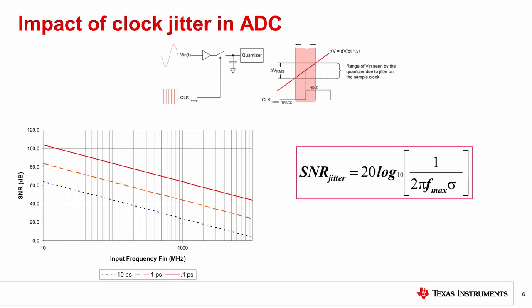Jitter in the clock source will limit the maximum input frequency at a particular signal-to-noise ratio. This figure here shows a representative plot of the achievable signal-to-noise ratio in an ADC with various clock sources. Effective SNR is given in the formula, where sigma is the peak-to-peak clock jitter.